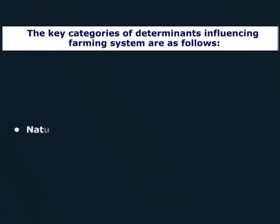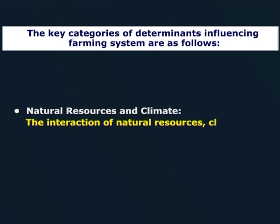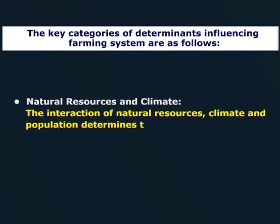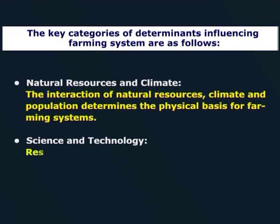A judicious mix of any one or more of these enterprises with agronomic crops helps to supplement the farm income and assists in recycling the farm residues and waste. The key categories of determinants influencing farming systems are as follows. Number one is natural resources and climate. The interaction of natural resources, climate, and population determines the physical basis for farming systems.